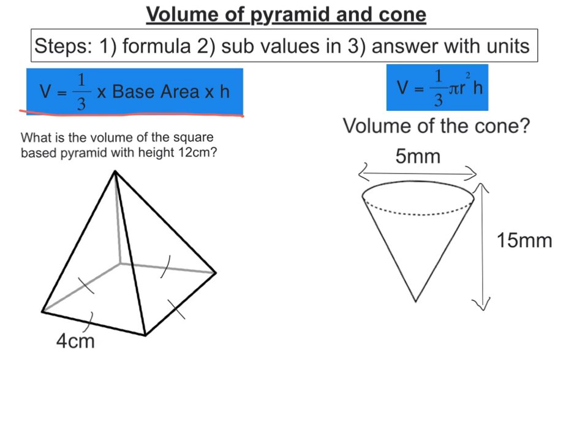So for the question given, formula based question, so first the formula, a third times A times H. We sub in the values we know, so a third.